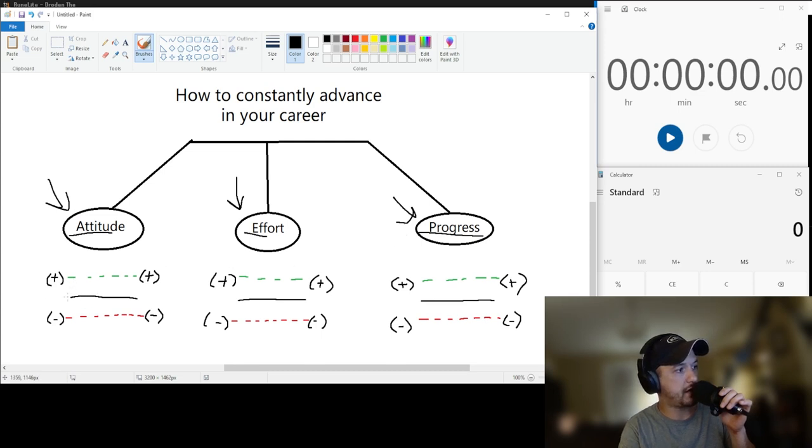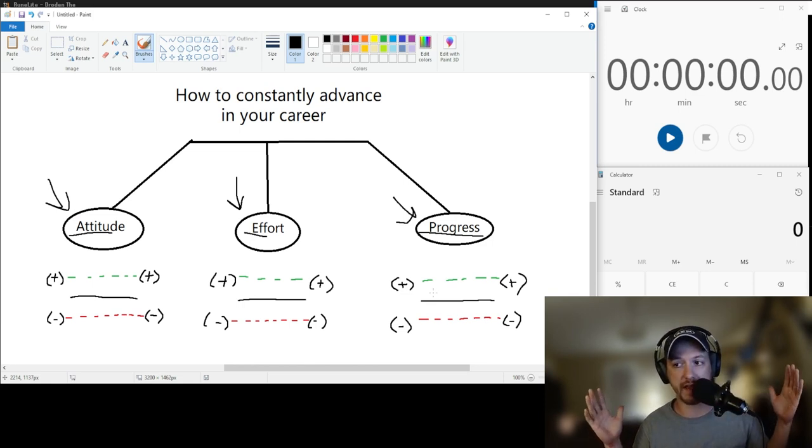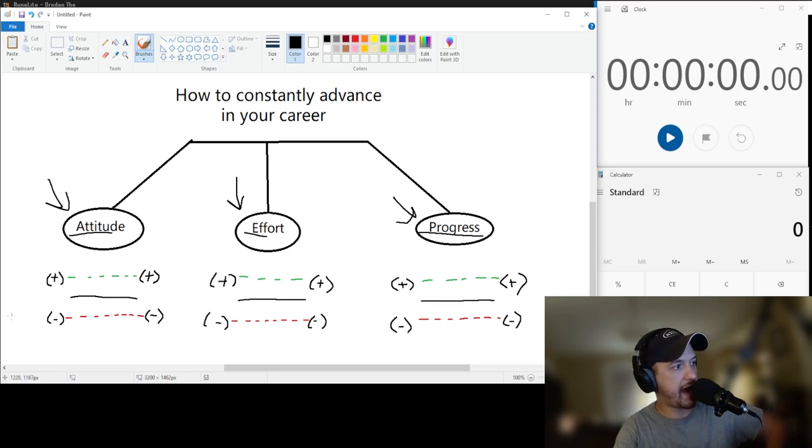So this middle line represents your nobodies, your people who just you wouldn't remember them if you ever saw them. They're NPCs. And the positive is just good attitude and then the negative line here is negative attitude.